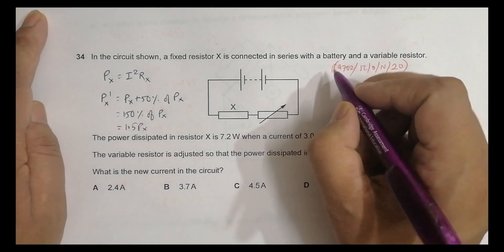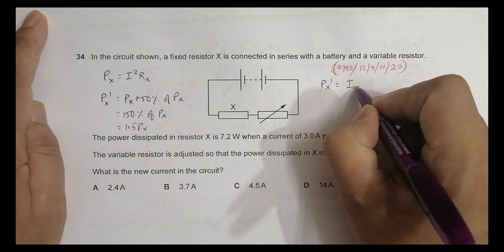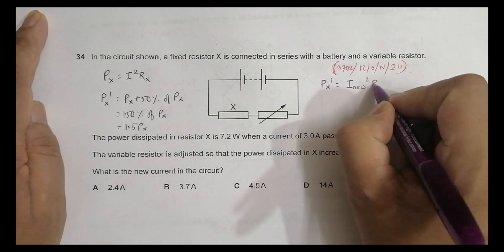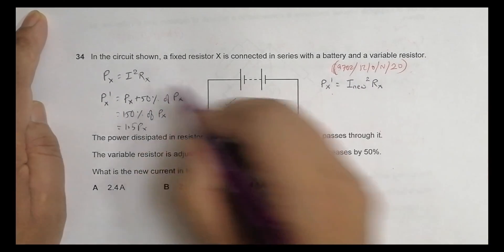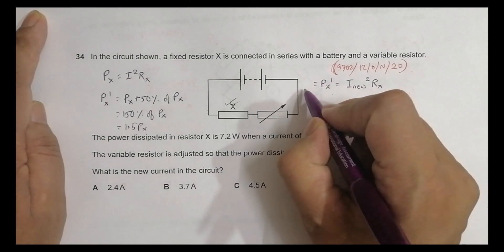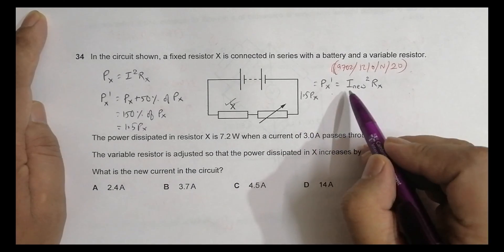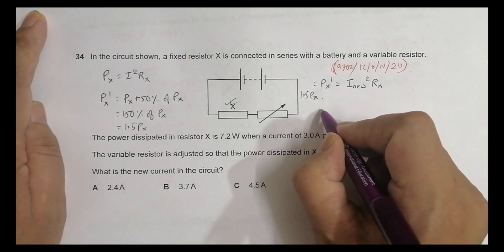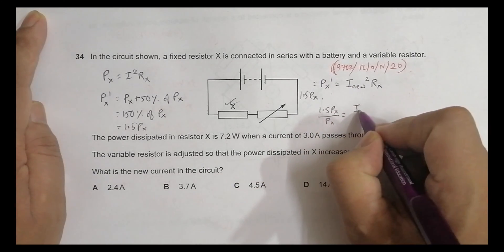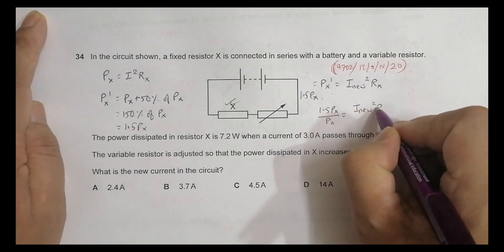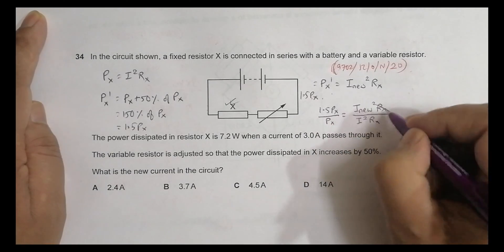Let the new current be I_new. Then P_X prime equals I_new squared times R_X. The resistance remains constant. Now we have two equations: the original and the new one. Since P_X prime equals 1.5 P_X, I divide the second equation by the first to get 1.5 P_X over P_X equals I_new squared R_X over I squared R_X.